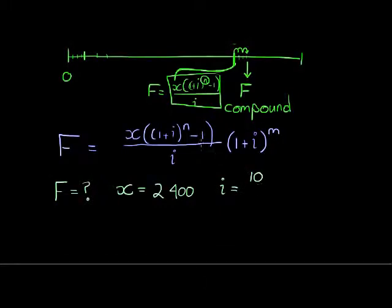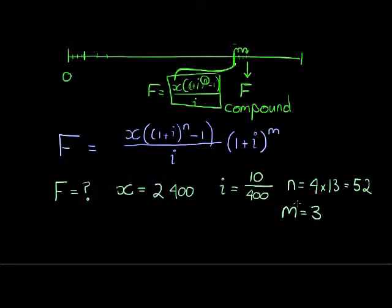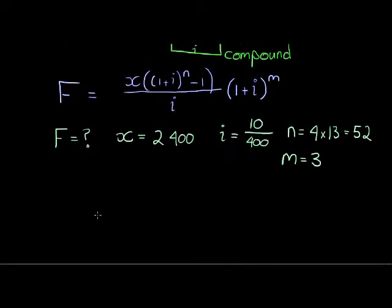For the interest rate we need quarterly interest, but we're given 10% per annum. Since interest compounds four times per year, we divide by 4, and because it's a percentage we also divide by 100 — so i = 10/400. For n: she makes 4 investments per year for 13 years, so n = 4 × 13 = 52. M, the second time period where she earns interest but makes no payments, is just 3 quarters.